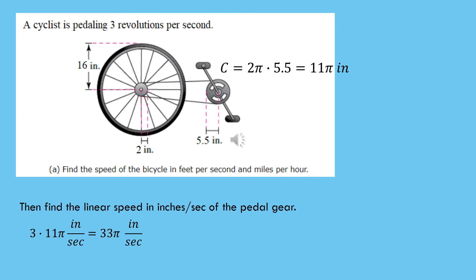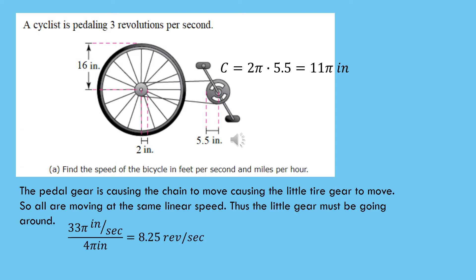That's also how fast the chain is going, and thus how fast the smaller gear connected to the tire is going. Since the chain is causing that little gear to move at the same pace, that little gear has a circumference of four pi inches because its radius is only two inches. So if I divide the speed of 33 pi inches per second by the circumference of four pi inches, I find that the little gear is turning 8.25 revolutions every second.